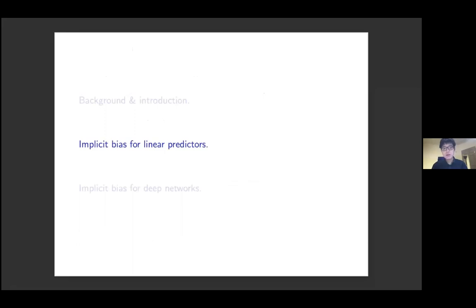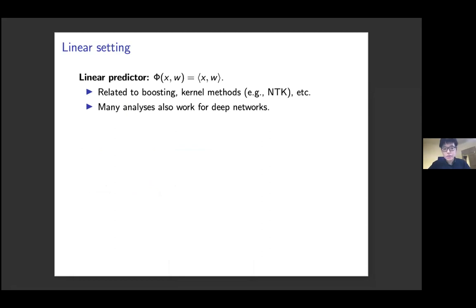We want to prove that GD and SGD can find a large normalized margin, or even globally maximize the normalized margin. If we can prove such results, we can invoke this general test error bound and answer why GD and SGD give good generalization. A linear predictor is just the inner product between the input x and model parameter w. In this case the training error is also convex, making the analysis relatively easier. Linear predictors are related to many important methods such as boosting, kernel methods, and neural tangent kernel.